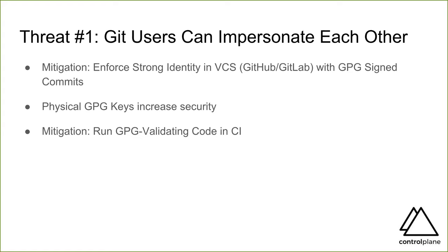Assuming we are signing everything, we should also be validating that code in our continuous integration. Yes, we have a signed commit, but is the owner of that key also allowed to sign? This is not something verified by hosted version control systems — they're a little lax about what they allow to be signed. It is something we must enforce ourselves.